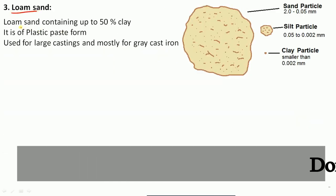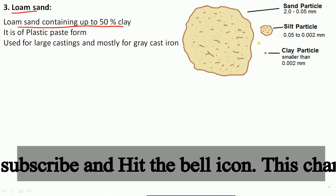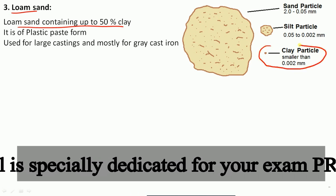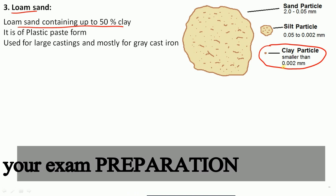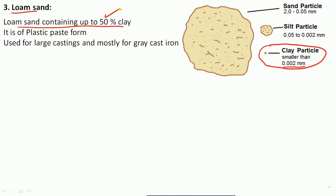Loam sand contains up to 50 percent of clay — clay being the smallest particle in the sand system with a size of 0.002 mm. Loam sand is in plastic paste form and is used for large castings, mostly for gray cast iron casting.